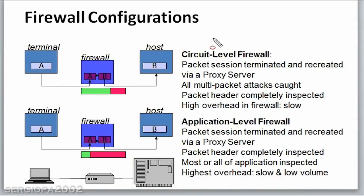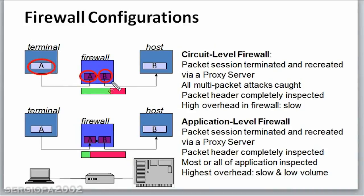The next type of firewalls are circuit level firewalls. In circuit level firewalls, the packet session between terminal and host that needs to be established in order to send the message is terminated at the firewall and recreated. You can see this represented as connection A arriving at the firewall, which then ends and transforms into connection B — and that B connection is the one that is transmitted onward. This adds an additional layer of security to the communication.